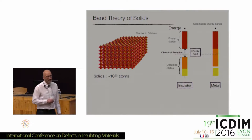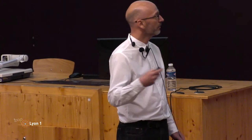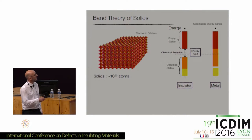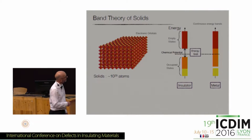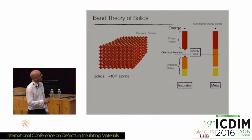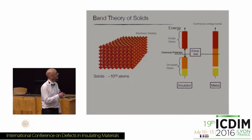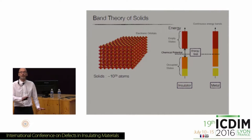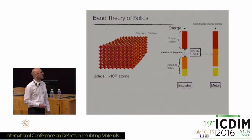One of the main consequences of band theory is that you know how to differentiate insulators from metals. In insulators, you have a gap that separates occupied states — the valence band — from conducting bands. That's what I'm going to focus on today: insulators, where there is a clear and unambiguous distinction between occupied states and empty states.